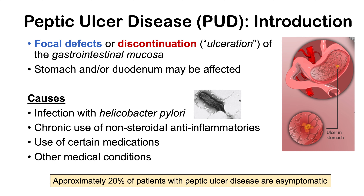Before we get into the signs and symptoms, it's important to note that approximately 20% of patients with peptic ulcer disease are asymptomatic — they have ulcers but don't experience any symptoms at all.